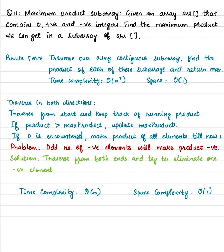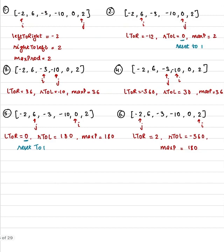So what we have to do is traverse from both ends and try to eliminate one negative element. The time complexity for this code will be O(n). If you try to look at it this way, we have to traverse in both directions.